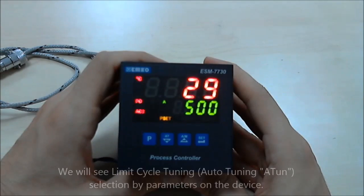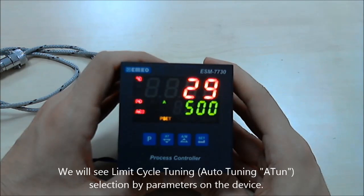This is Emco ECM 7730 series process controller. We will see how we can select limit cycle tuning operation by this device. Other name of limit cycle tuning operation is auto-tune operation.